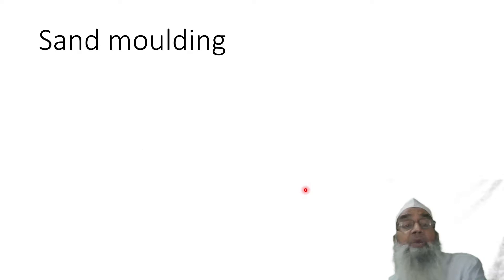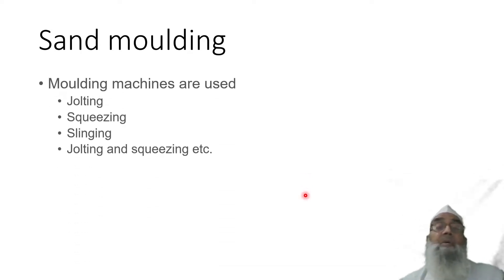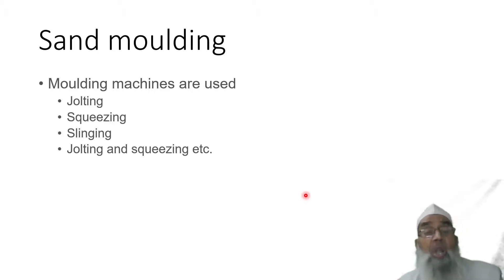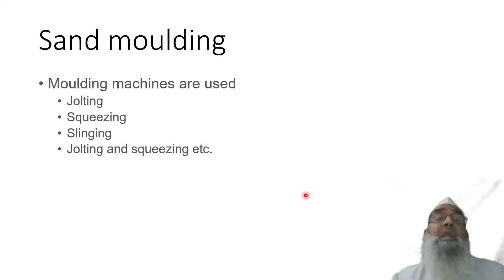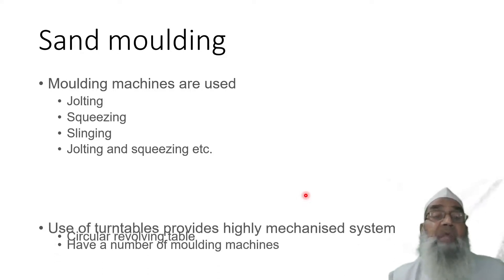For sand moulding, there are various sand moulding machines such as jolting, squeezing, slinging, and jolting-and-slinging machines, and one can adopt any particular type depending upon convenience and availability.